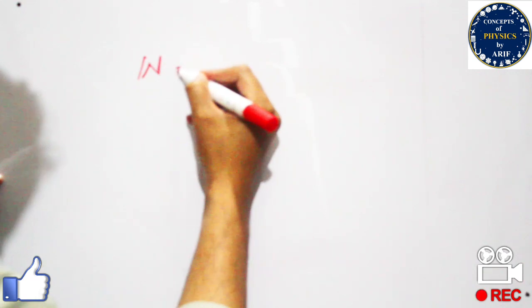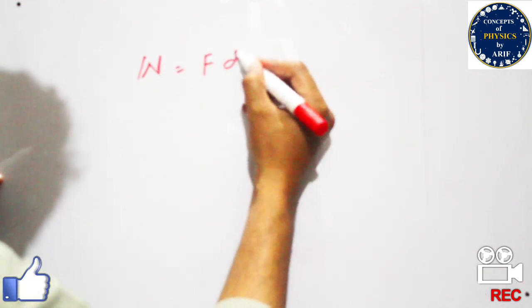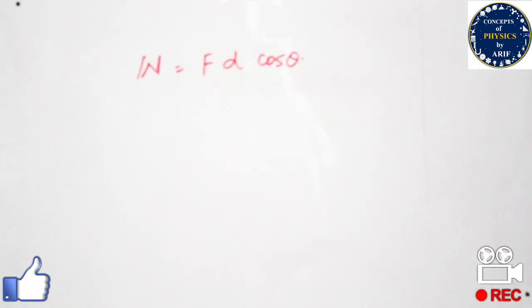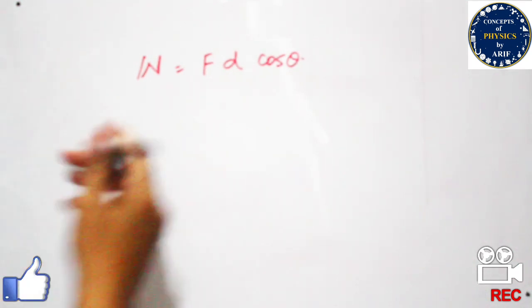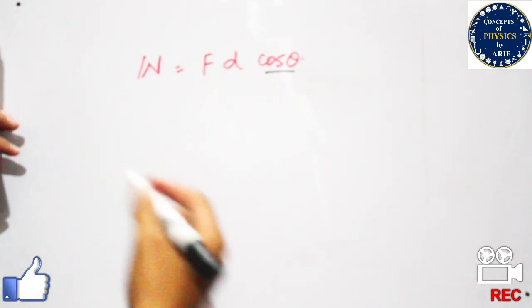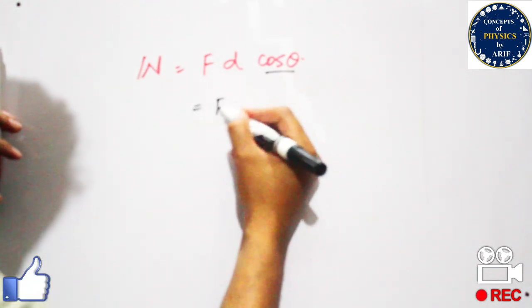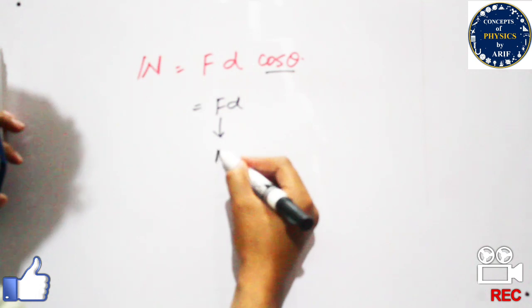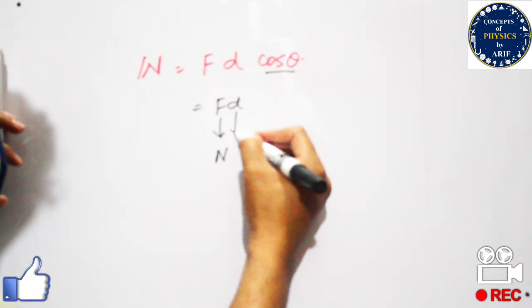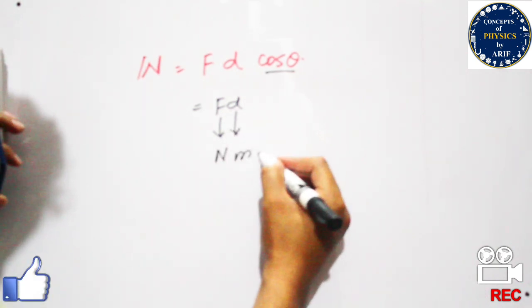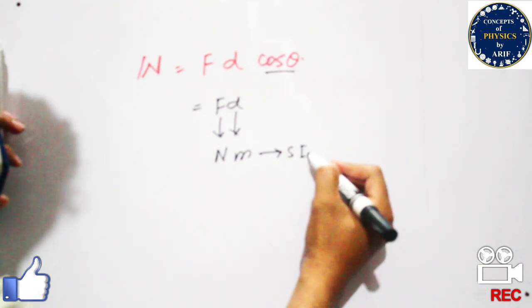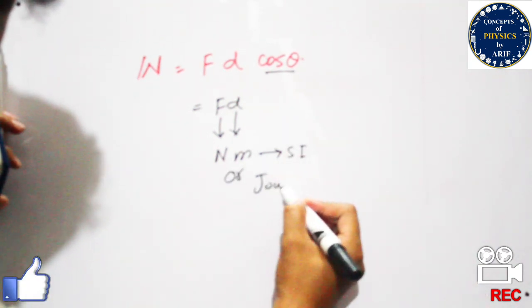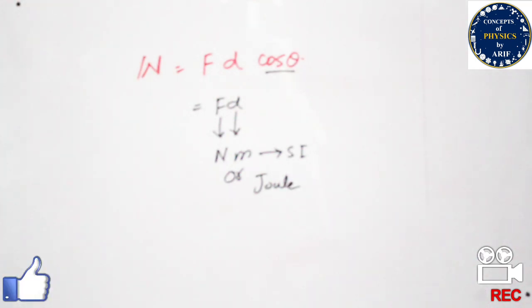Work is equal to force multiplied by displacement and cosine of theta. In this case we are considering maximum work, so cosine theta will be one, giving us F times d only. The unit of force is newton and the unit of displacement is meter, so the SI unit of work is newton meter, or joule.